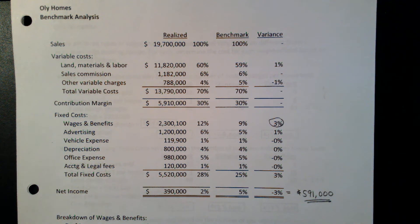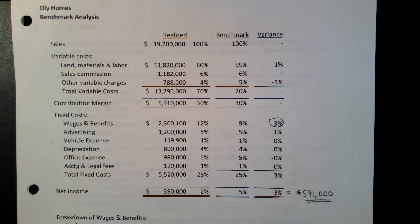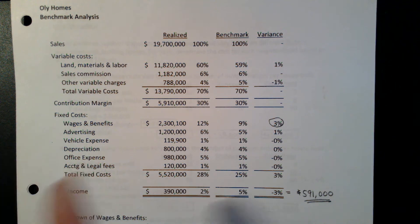Let's take a look at an example of an activity-based costing problem that is kind of a little bit more broad than what your book shows. I'll post a copy of this on Canvas as well. In this particular case, we work for a company called Ole Homes. Of course, this is a fictional problem.